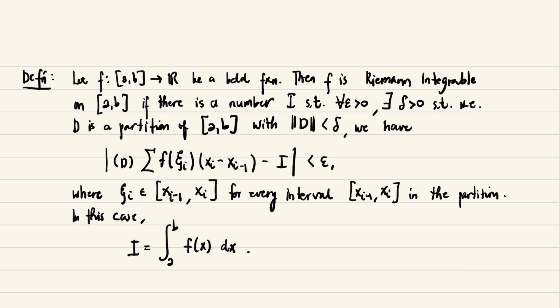Okay, so let's start now. We'll start first with this definition. Let f be a function from this closed interval [a,b] to R, be a bounded function. We say that f is Riemann integrable on the closed interval [a,b] if there is a number I such that for every epsilon greater than 0, there exists a delta greater than 0.